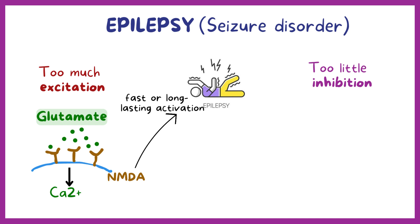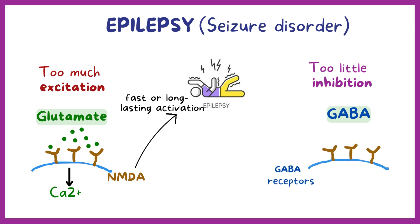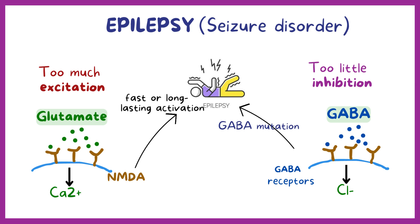On the flip side, the main inhibitory neurotransmitter in the brain is GABA, which binds to GABA receptors that tell the cell to inhibit the signal by opening channels that let in chloride ions — negative ions that tell the cell to inhibit signals. Some patients with epilepsy seem to have genetic mutations in which their GABA receptors are dysfunctional, and so they aren't able to help inhibit signals.